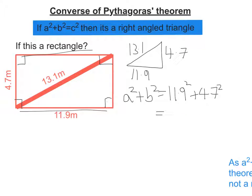So square those, we're going to get 141.61 plus 22.09. Add those together, we're going to get 163.7.